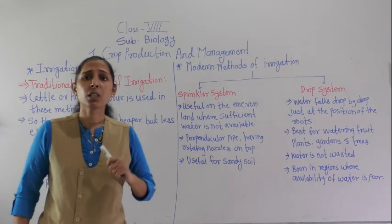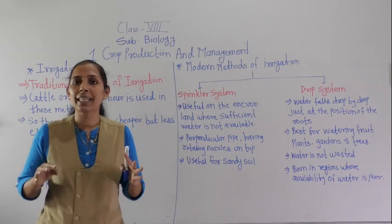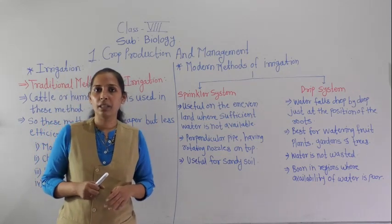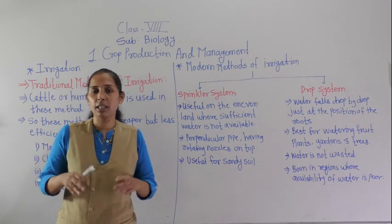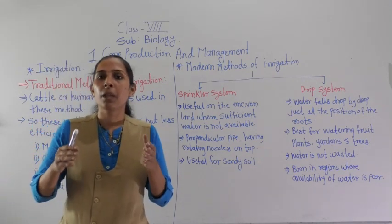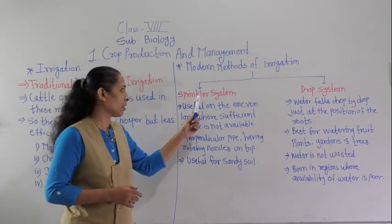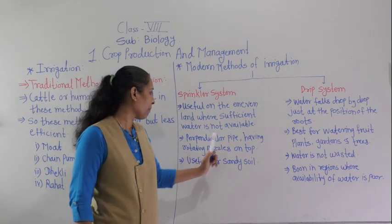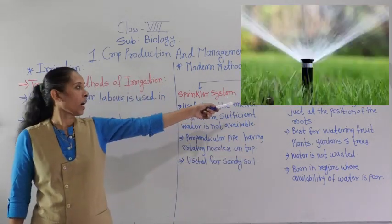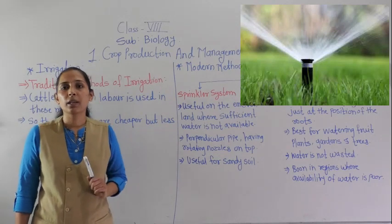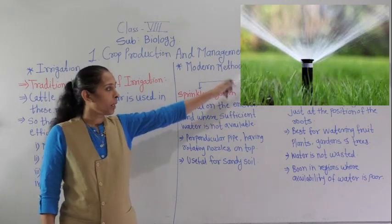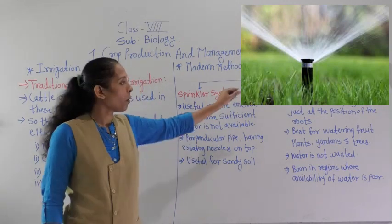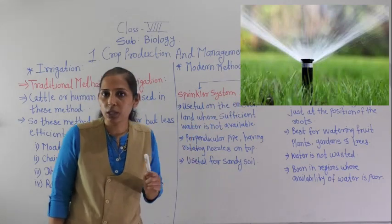The sprinkler system is useful on uneven land where the availability of water is less. It is mainly used in areas where the land is uneven and there is less availability of water. In the sprinkler system there is a perpendicular pipe to the land, and on the top of that perpendicular pipe there is a rotating nozzle which has holes.